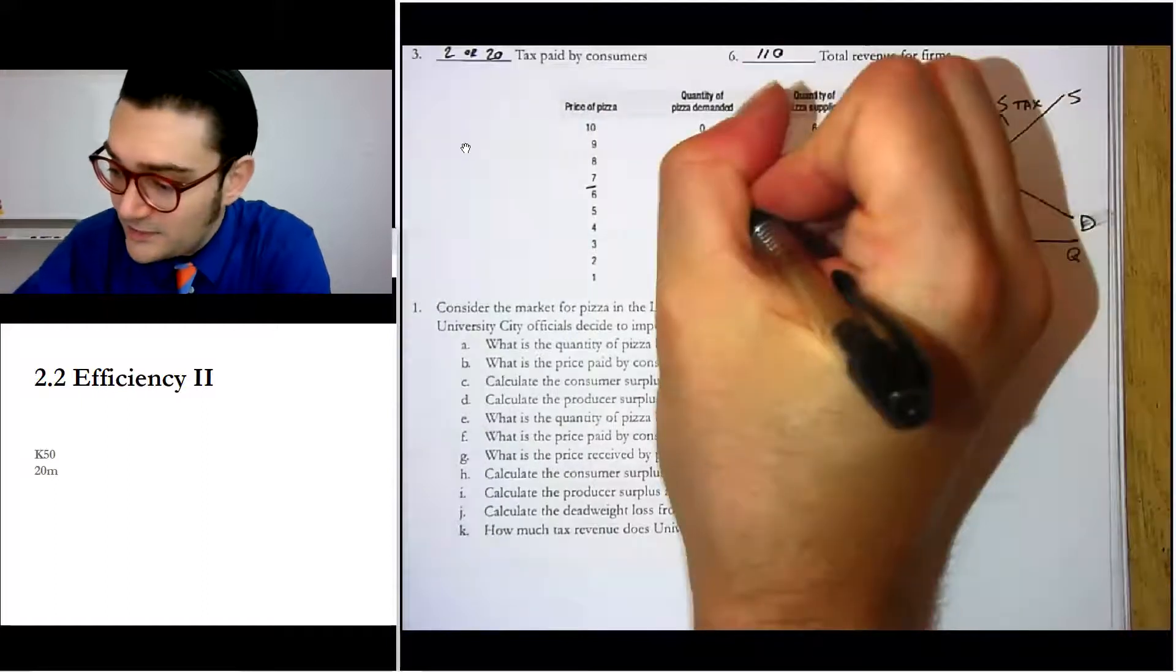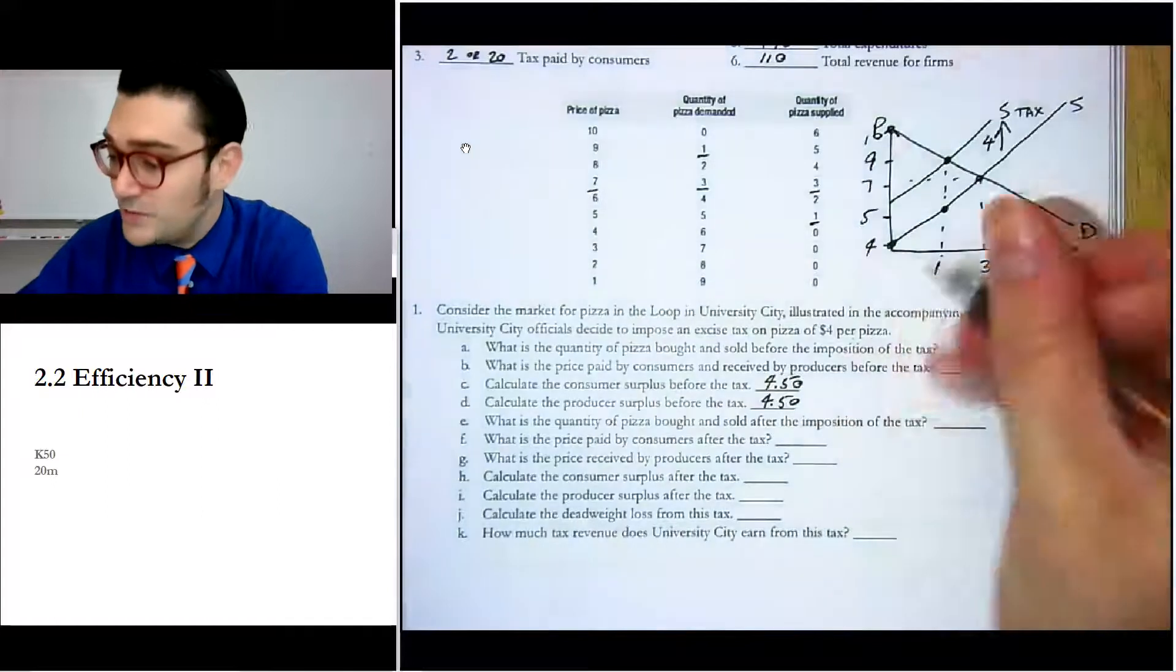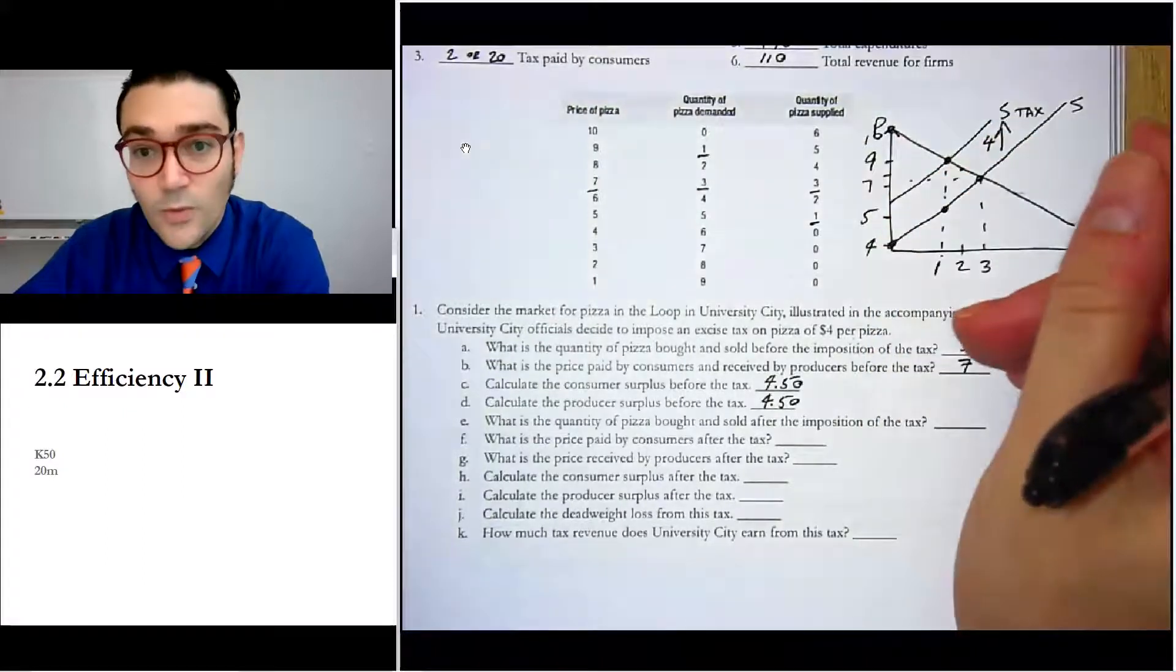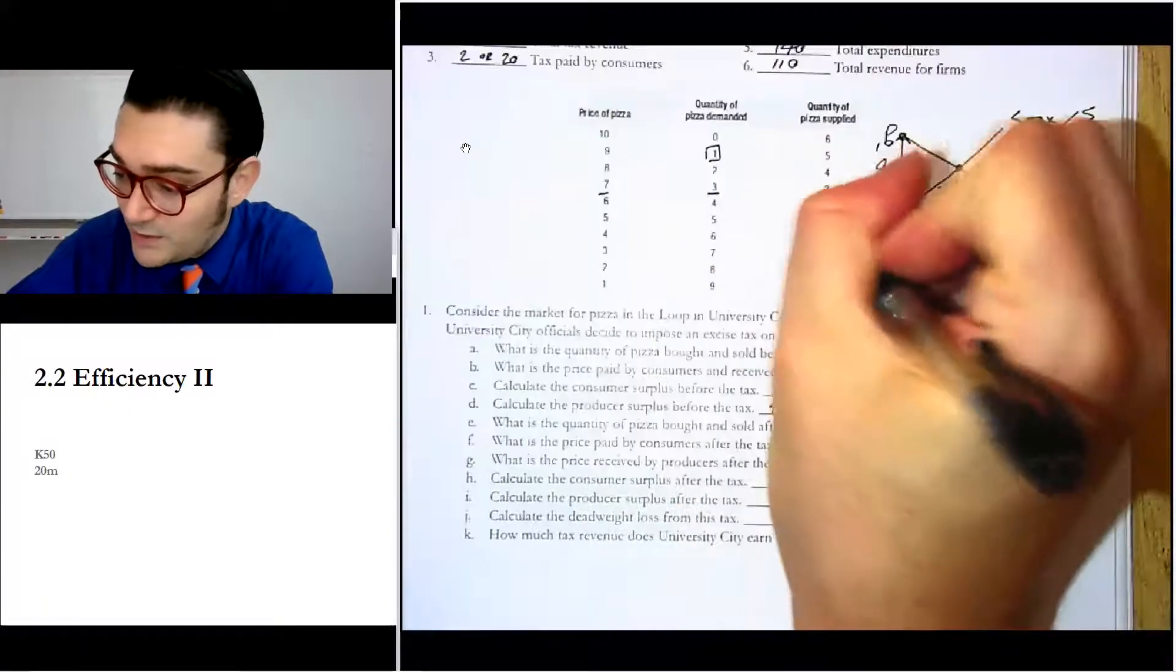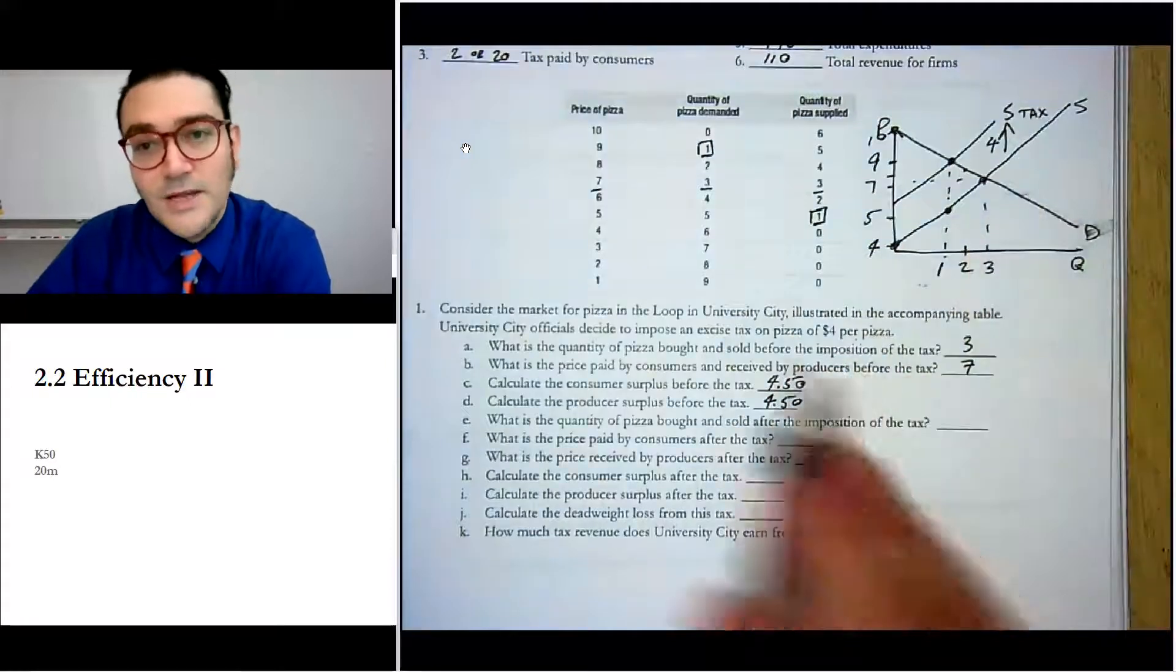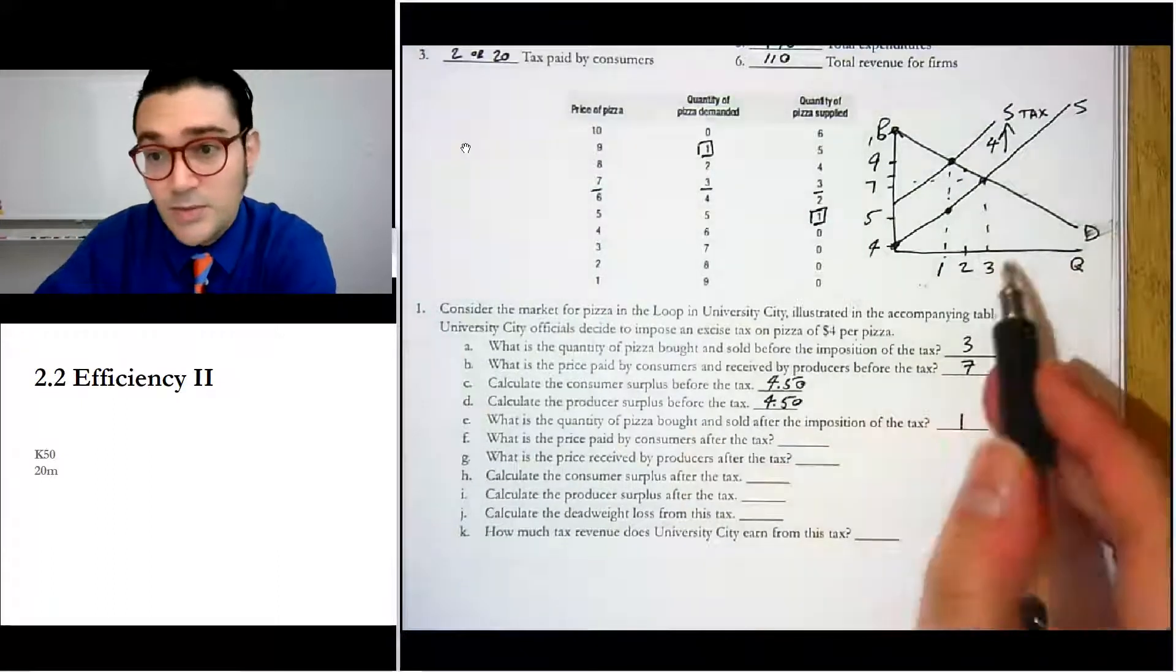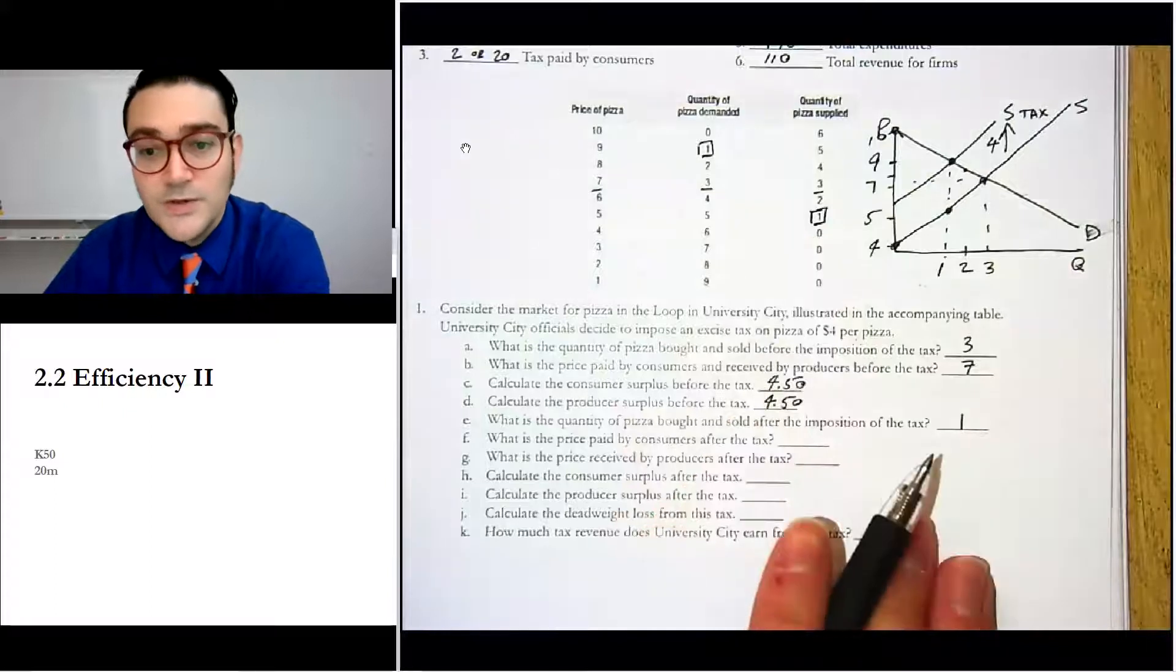So this is a little tough to do, but if you look here at one pizza demanded at nine dollars, and then you go down four dollars from that, and you see at five dollars there's one pizza supplied. You can see that there's a four dollar wedge between the quantity demanded and quantity supplied. And that's actually where we're going to be: nine dollars and five dollars, and then it's at one pizza. Now again, if you're like how in the heck did he see that? You could go through and plot the points. You can look for where is there a wedge between the quantity demanded and quantity supplied where it's four dollars apart.